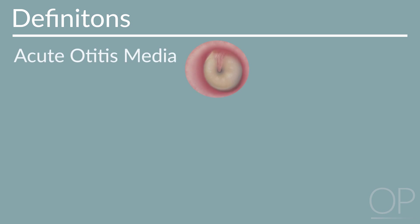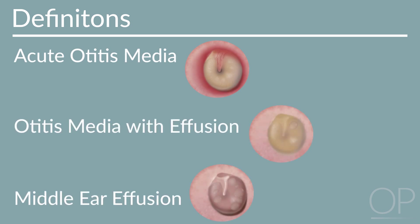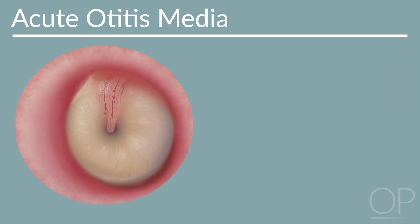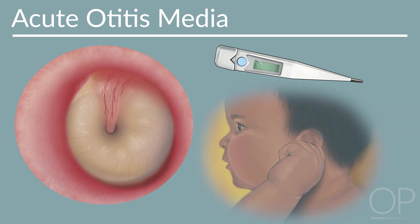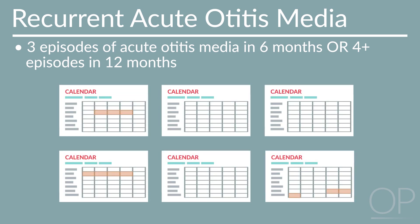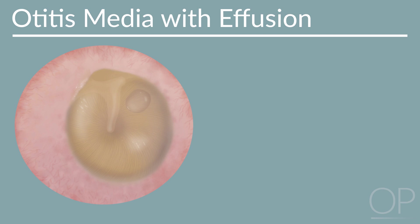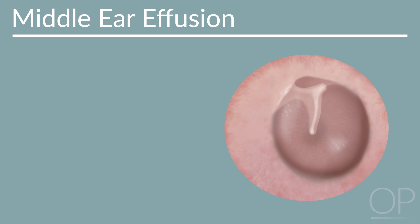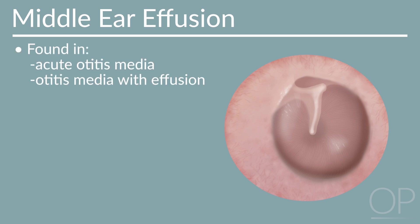It is important to define acute otitis media, otitis media with effusion, and middle ear effusion. The most recent American Academy of Pediatrics guidelines define acute otitis media as moderate to severe bulging of the tympanic membrane, or new onset of otorrhea not due to acute otitis externa, accompanied by acute signs of illness and signs or symptoms of middle ear inflammation. Recurrent acute otitis media is defined as three separate episodes in the last six months or four or more episodes in the past 12 months. Otitis media with effusion is defined as inflammation of the middle ear with liquid collected in the middle ear, with signs and symptoms of infection absent. Middle ear effusion simply refers to fluid in the middle ear and is found in both acute otitis media and otitis media with effusion.